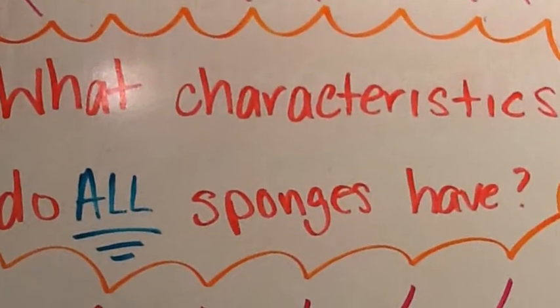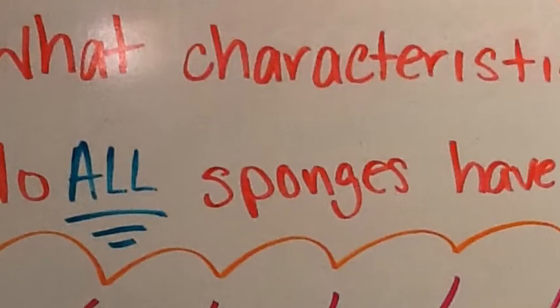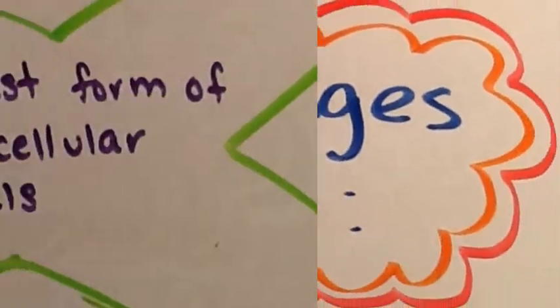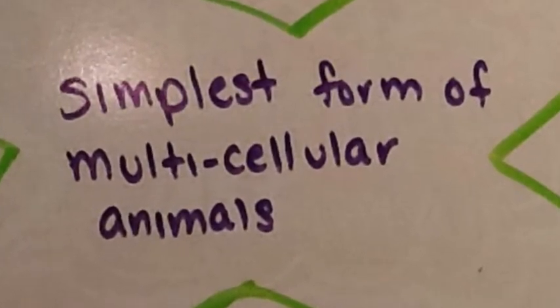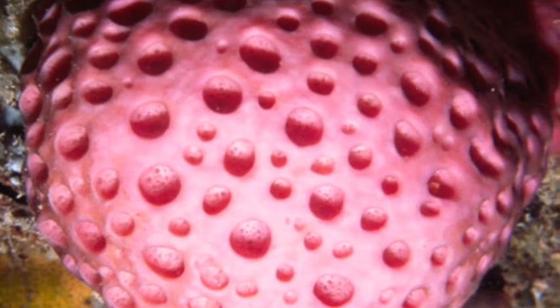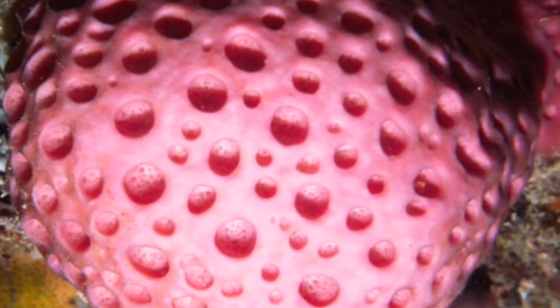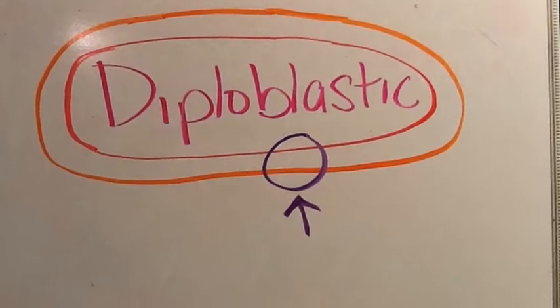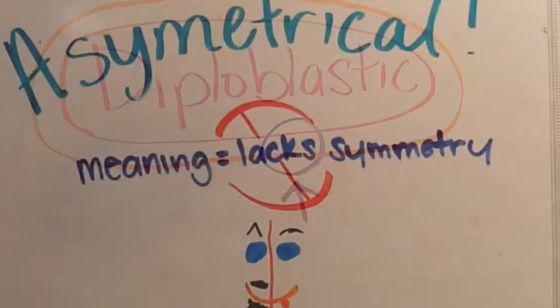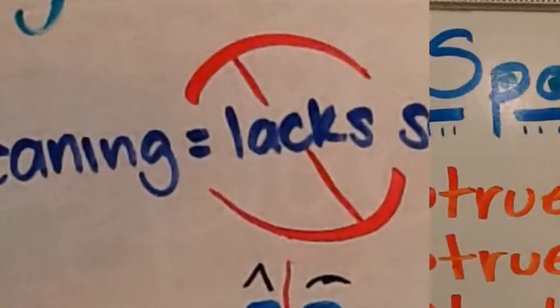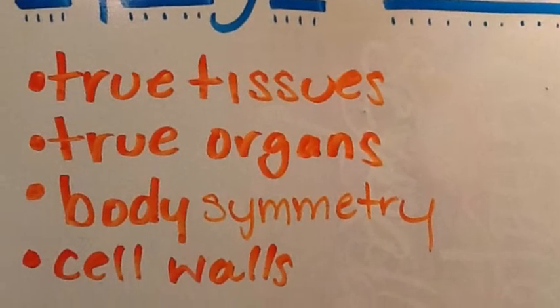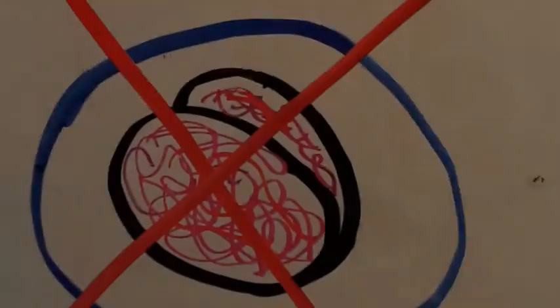What characteristics do all sponges have? Sponges are the simplest form of multicellular animals. All are diploblastic — adults may have multiple cell layers, but initially arise from two. Mostly asymmetrical, meaning they lack symmetry. Sponges lack true tissues, true organs, body symmetry, and cell walls, meaning no brain.